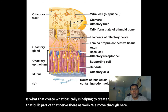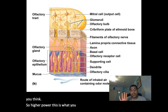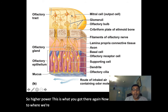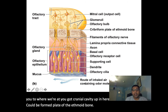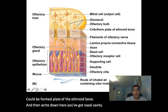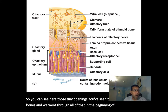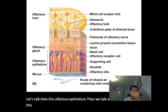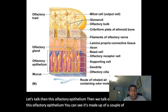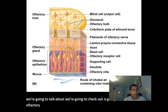Zooming in on that region, you've got the cranial cavity up here, the cribriform plate of the ethmoid bone, and the nasal cavity right down here. You can see those tiny openings. The olfactory epithelium is made up of a few different cell types, the major one being the olfactory sensory neurons, also called olfactory receptor cells.